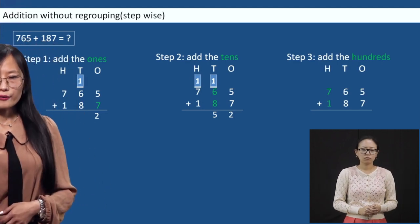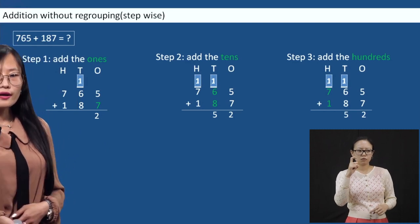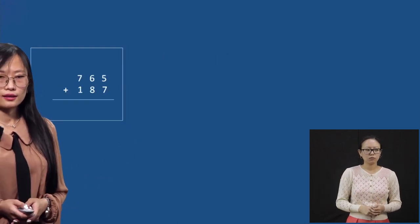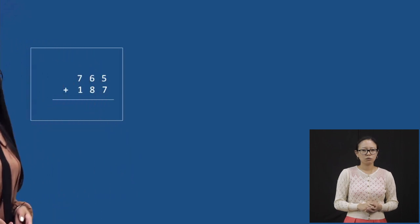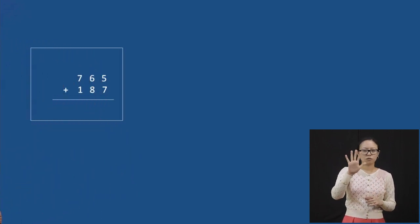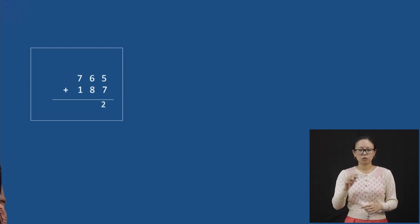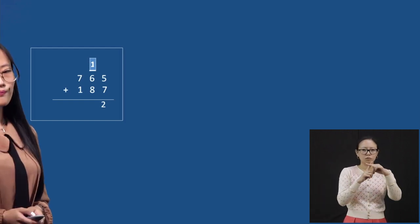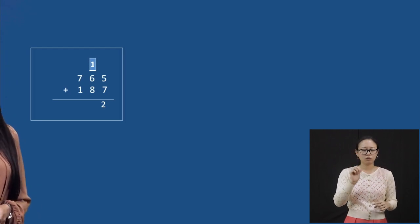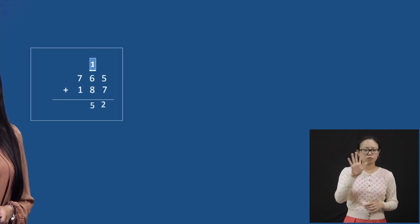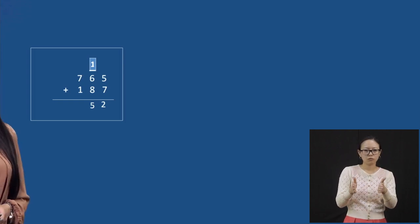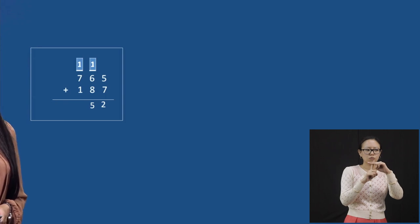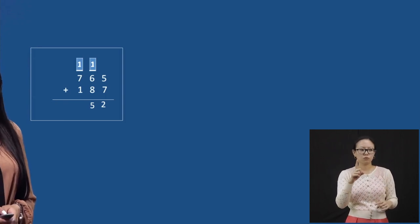Now we will add the hundreds. One plus seven is eight. Eight plus one is nine. Now without the steps: five plus seven is 12, write two in ones place, one carry over to tens. One plus six is seven, seven plus eight is 15, write five in tens place, one carry over to hundreds. One plus seven is eight, eight plus one is nine.